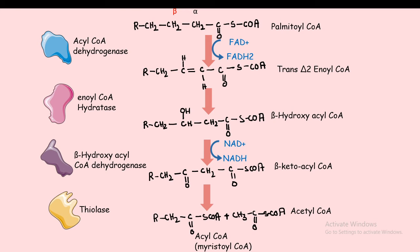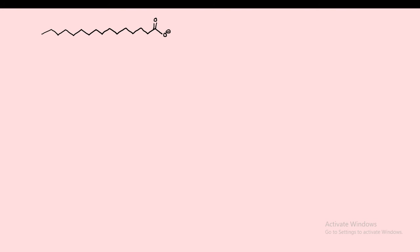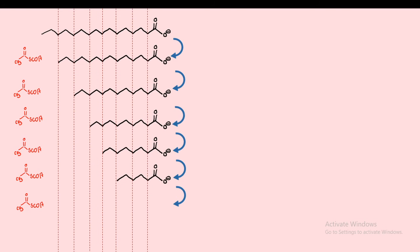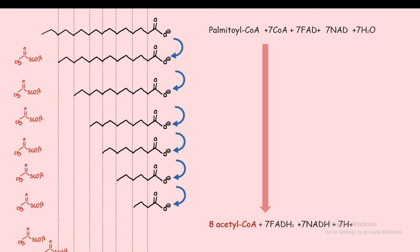The last step is catalyzed by thiolase. These four enzymes — acyl CoA dehydrogenase, enoyl CoA hydratase, beta-hydroxyacyl CoA dehydrogenase, and thiolase — are the key enzymes for beta oxidation. Looking at the beta carbon, at each stage the groups associated with it change, hence the name beta oxidation. For a 16-carbon palmitoyl CoA, the cycle runs seven times and eventually gives eight molecules of acetyl CoA, seven molecules of FADH2, and seven molecules of NADH.